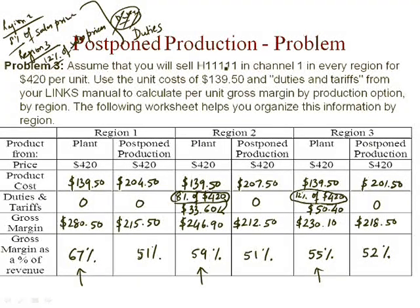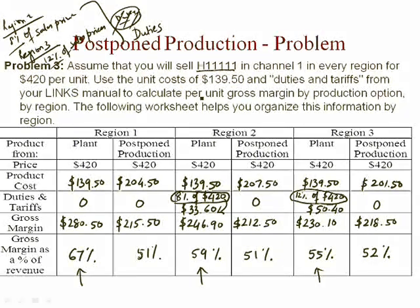This may not be the case for every product and every scenario. In our situation, we were using a product with the lowest possible configuration, meaning we were overbuilding the product a lot — 9 kilograms of alpha and beta. If your product had a much higher configuration, these percentage values would change, and that would tell you whether you should use postponed production or produce in the plant and ship to regions. This is something you should calculate to finalize whether to engage in postponed production or not. That's where I end my discussion on production issues.